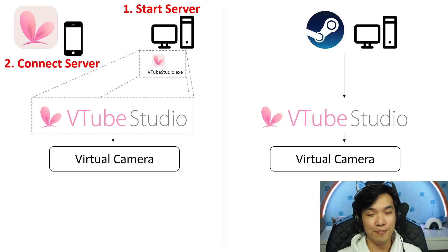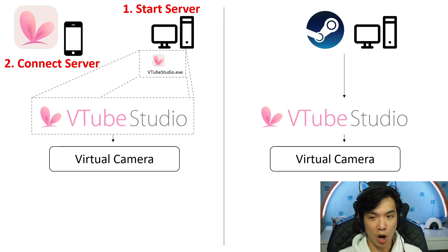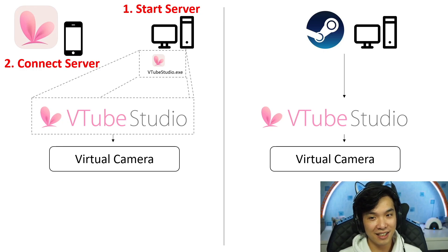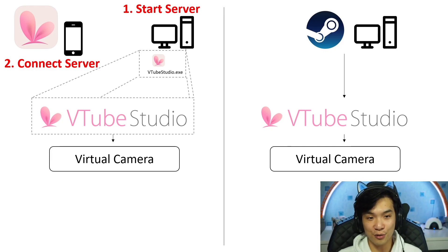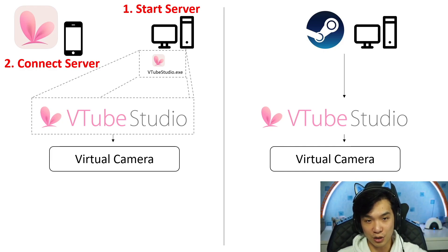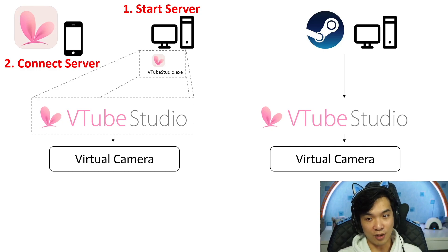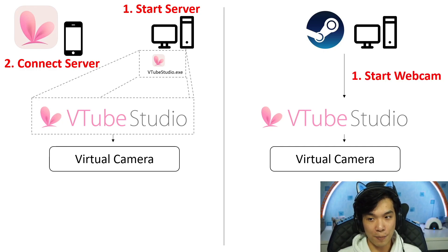On the right side, Steam. It is much easier. All you need to do is to start VTube Studio on Steam. It has nothing to do with the VTube Studio executable file you downloaded previously. It is all on Steam and you start a webcam. That's it.